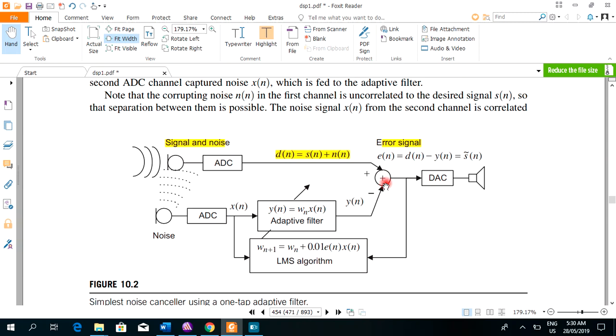The output of adaptive filter is weighted sum of the input. What does it mean? It means W of N multiplied by X of N. X of N is the input that is given to the filter. And now, from where this W of N comes, this W of N comes from least mean square algorithm, which will be discussed later.